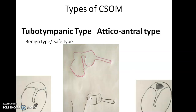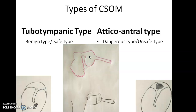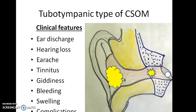Coming to the atticoantral type — the attic is a region towards the mastoid antrum. If the perforation of the tympanic membrane is at the level of the roof of the tympanic cavity, the infection can lead into the mastoid antrum. This region is called atticoantral. Because it is near the roof, it cannot drain easily; therefore, it is the dangerous or unsafe type. Instead of draining through the tympanic membrane, the infection can spread elsewhere in the body. Complications are more common with the atticoantral type.